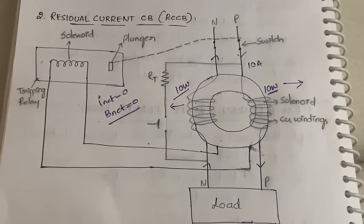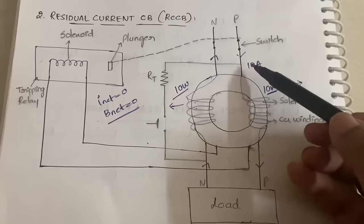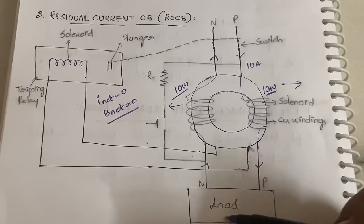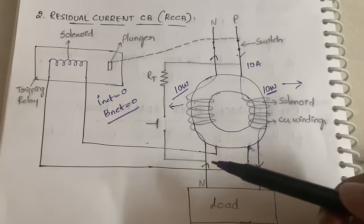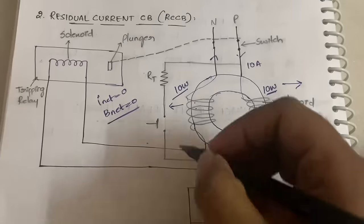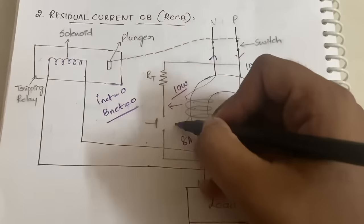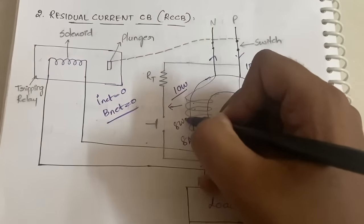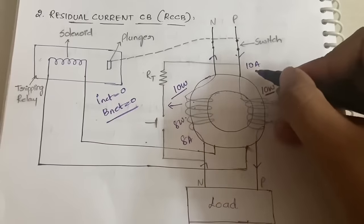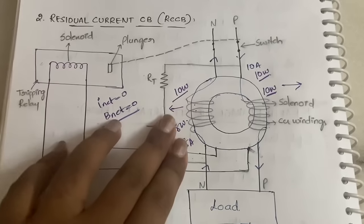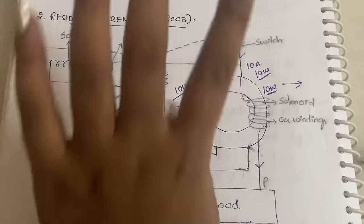In abnormal condition, the same 10 amperes comes through the right side windings and the phase to the load. But suppose 2 amperes of current is leaked — only 8 amperes goes back through neutral. When 8 amperes goes through the left windings, only 8 webers of magnetic field is generated, but on the phase side, 10 webers is still generated. They no longer cancel each other.